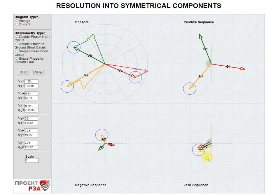And finally, the zero sequence system is a system of three co-directional phases.